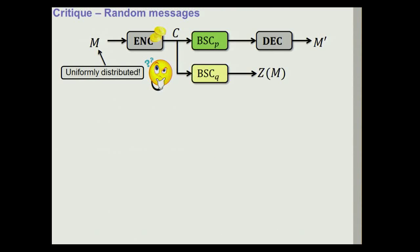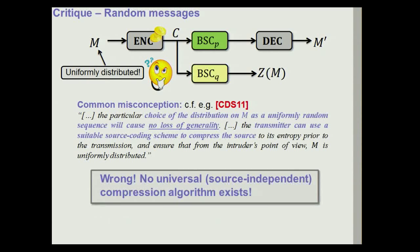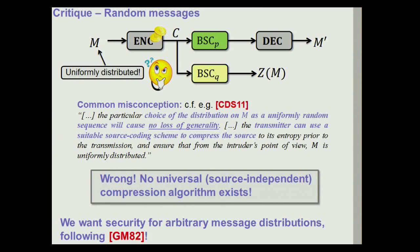As cryptographers, the first thing that captures our attention is: why does the message need to be uniformly distributed? In the information theory and coding community this seems to be a common misconception — people argue it is fine to assume messages are uniform without loss of generality, since you can always apply source compression to transform the message into a uniform one. But we know this is not true. A compression algorithm would need to take a message with an unknown arbitrary distribution and transform it into a uniform one without knowing the distribution — which we cannot achieve. We really want one single encryption algorithm that works for any message distribution.